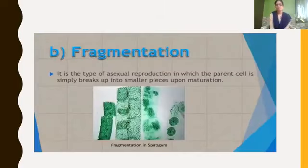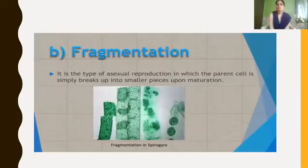What is fragmentation? It is a type of asexual reproduction in which the parent organism simply breaks into smaller pieces after maturation — fragments or pieces. This method is called fragmentation. It occurs in plants; the example is spirogyra.